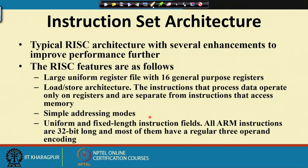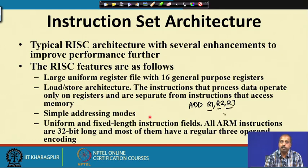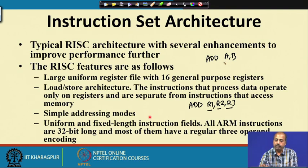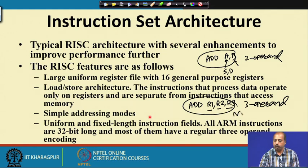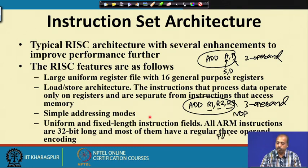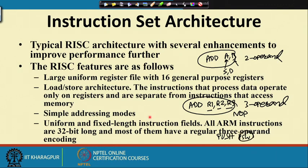All instructions are 32-bit and 3-operand instructions. For example, ADD R1, R2, R3 has operand 1, operand 2, and destination — 3 operands. In contrast, 8085 or 8051 instructions like ADD A, B have A as both source and destination — these are 2-operand instructions. There are also 0-operand instructions like NOP and 1-operand instructions like PUSH PSW. But in the ARM processor, most instructions are 3-operand in nature with 3-operand encoding.